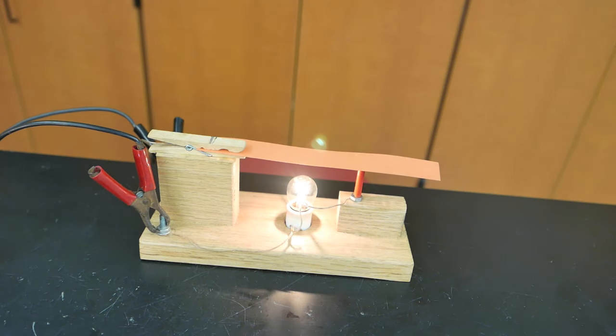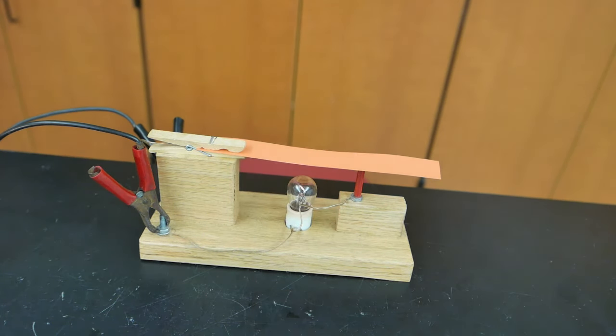It's the heat from the light bulb that causes the biomaterial strip to bend up slightly, break contact, and the light bulb goes off. As it cools, the strip comes down and makes contact again, and turns the light bulb back on.